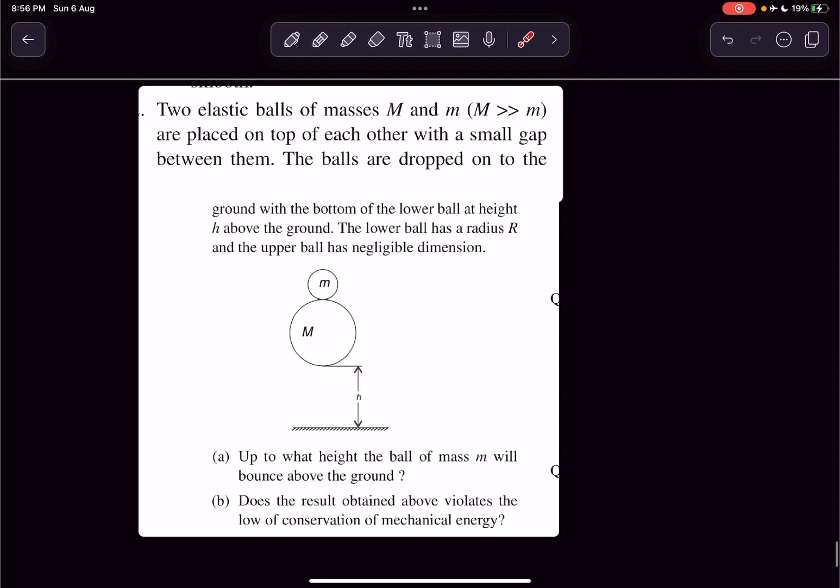Hey everyone, welcome back to my channel. In this video we'll solve this problem from the book SBT. We have two elastic balls of masses capital M and small m, and it's given that the mass capital M is much greater than the mass small m.